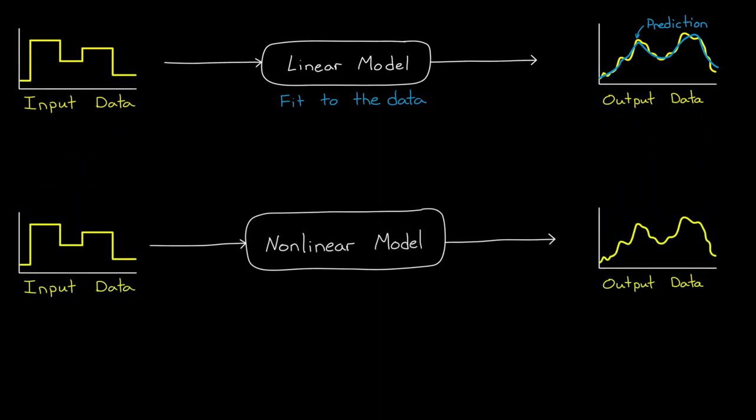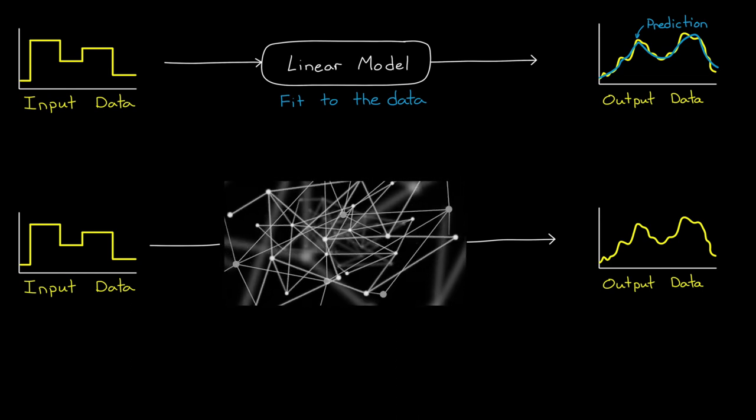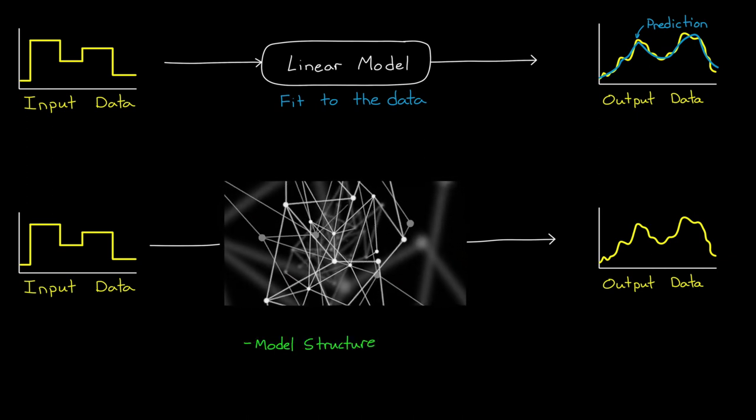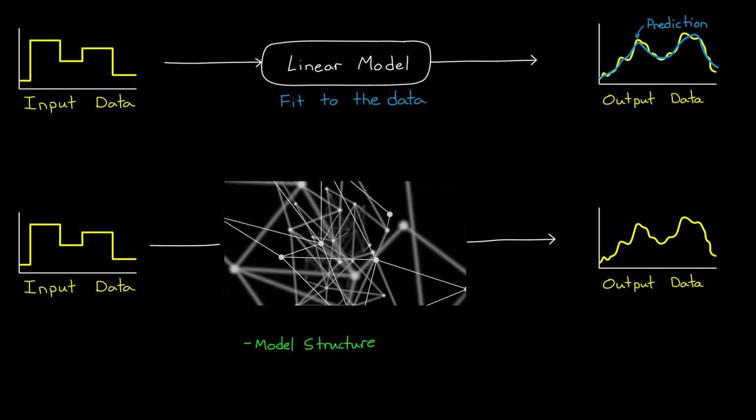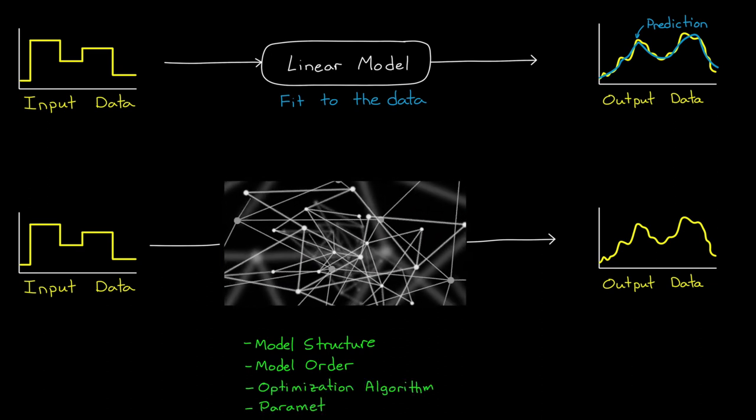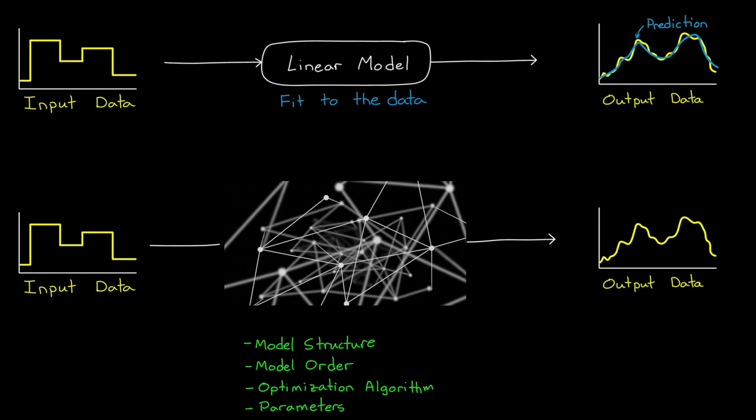When you look at non-linear system identification, you'll quickly realize there is a web of near infinite options to choose from. We can choose from a ton of different non-linear model structures, different model orders, optimization algorithms, different parameters, and the list goes on.